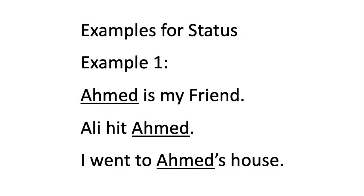There are three sentences as examples. Ahmed is my friend — you can see Ahmed is playing a particular role here; it is the doer, it is the subject of that sentence. Now look at the next example: Ali hates Ahmed — Ahmed is actually an object here, called maf'ul, maf'ul bihi. So Ahmed is playing the role of maf'ul, an object. In the first example, Ahmed was the fa'il, the doer.